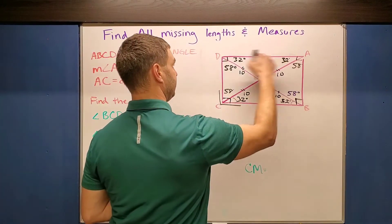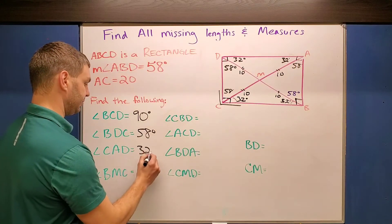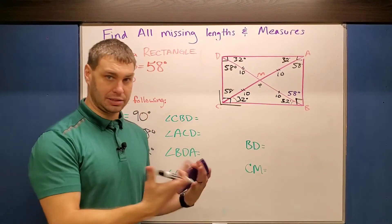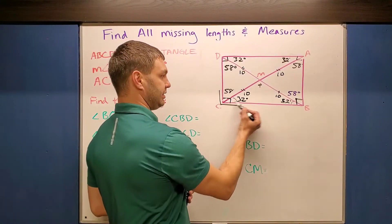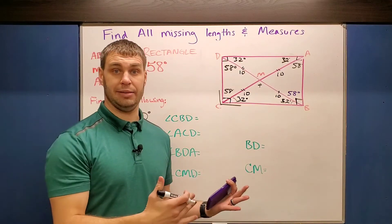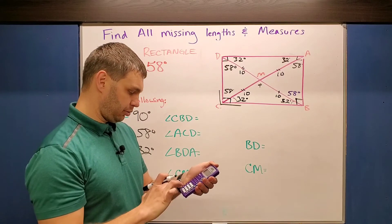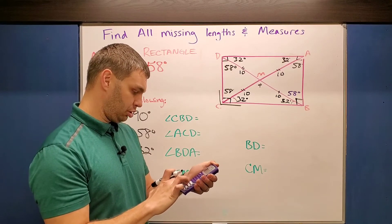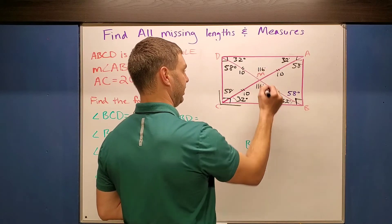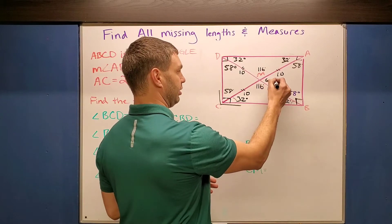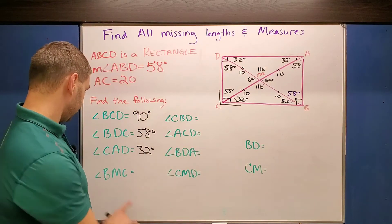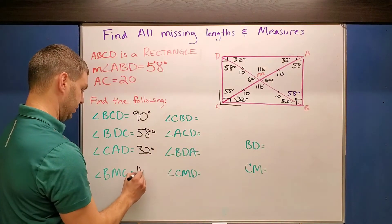Next is BMC. I don't know any middle angles yet, but if we think of these as individual triangles — there's 180 degrees total — and if this is 32 and this is 32, I find the last angle: 180 minus (32 + 32) = 180 minus 64 = 116. So if I do 180 minus 116, that is 64. So BMC is 116 degrees, also 116 up here, and then 64 for the two sides since they form linear pairs.